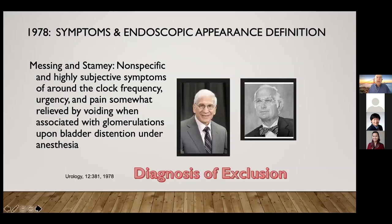The whole field really changed in 1978 when at Stanford, Stamey and Ed Messing, who was one of Tom Stamey's residents, wrote up a paper that became extremely influential. It described non-specific and highly subjective symptoms of around-the-clock frequency, urgency, and pain somewhat relieved by voiding when associated with glomerulations under bladder distension under anesthesia. So now the definition encompassed patients with symptoms and either glomerulations or Hunter lesions. This left out a giant number of patients who did not have Hunter lesion or glomerulations who had the exact same symptoms, causing a lot of confusion related to this definition.